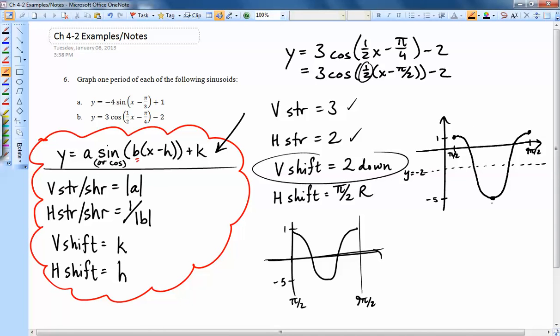This point right there is going to be the average of π/2 and 9π/2. So that's 10π/2 cut in half. So it's 5π/2 comma negative 5 right there.